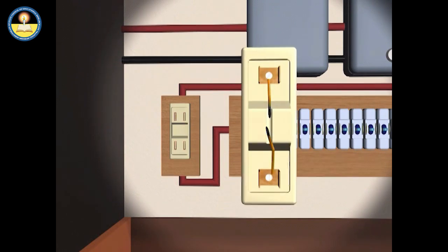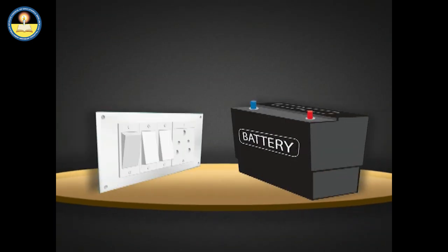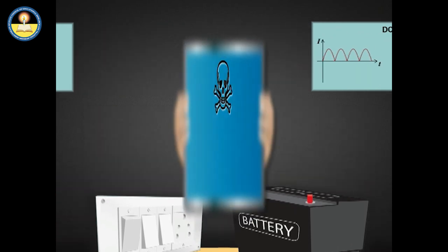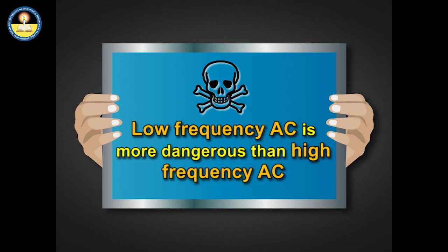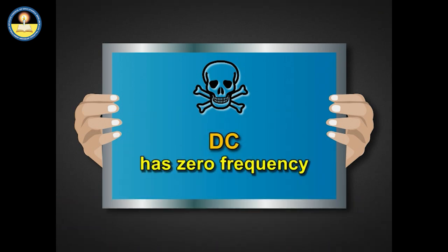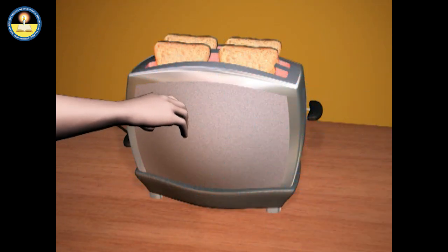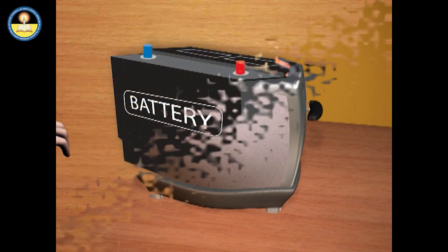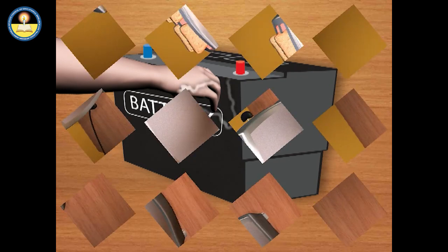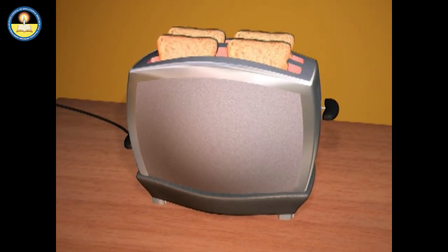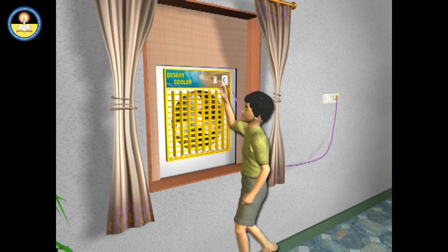Before working with electricity, one must ensure whether it is AC or DC current. Low-frequency AC is more dangerous than high-frequency AC, and DC has zero frequency, so DC is more dangerous than AC of the same voltage. Generally, AC throws a person away while one gets stuck to a DC source. Electricity should be used in a careful and safe manner, as electrical safety is one of the most important requirements in our daily life.